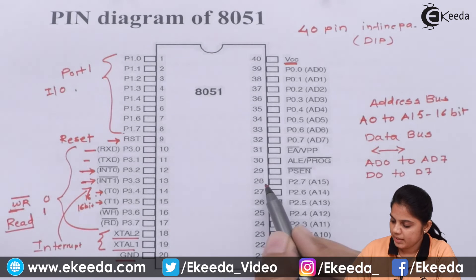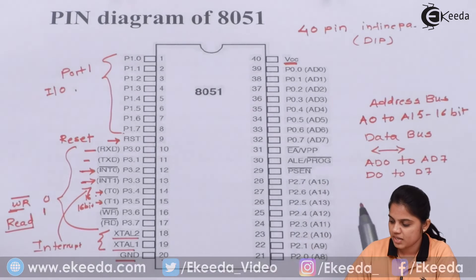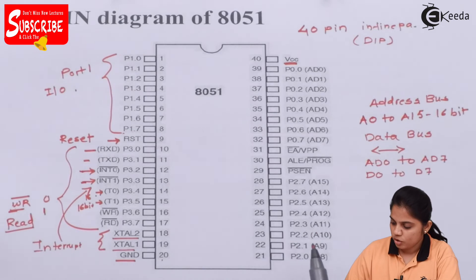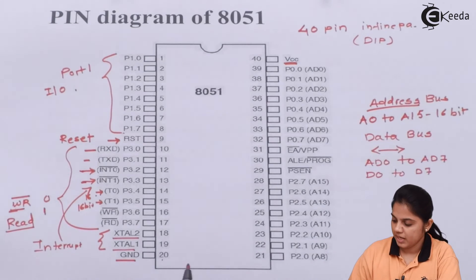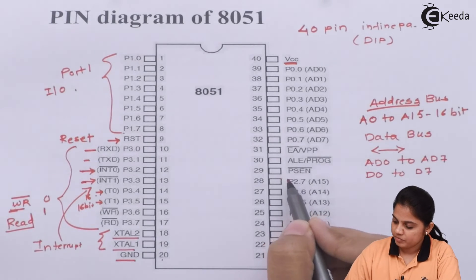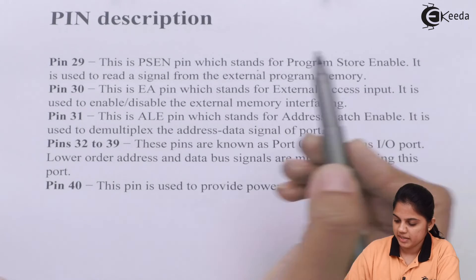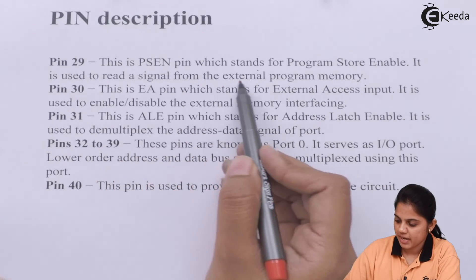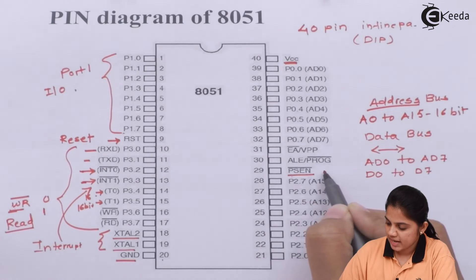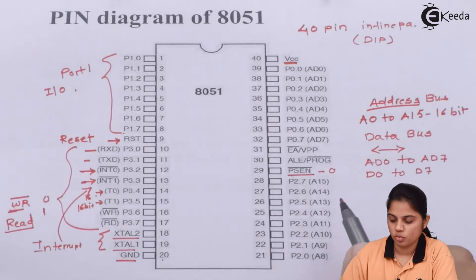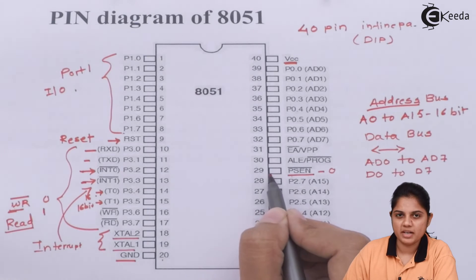Pin numbers 21 to 28 are for A8 to A15, meaning they can be used as an address bus. P2.0 to P2.7 — these pin numbers can be used for addressing data. Pin 29 is the PSEN pin, which stands for Program Store Enable. It is used to read a signal from external program memory. When enabled — given as 0, so its complement is 1 — pin number 29 will be high and will read data from the external device.